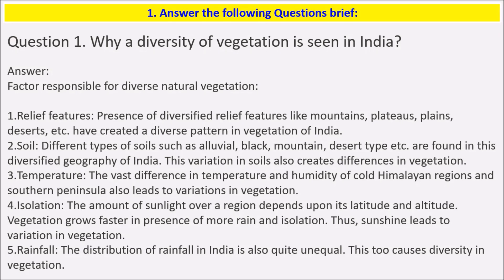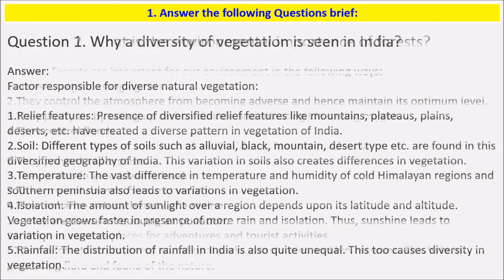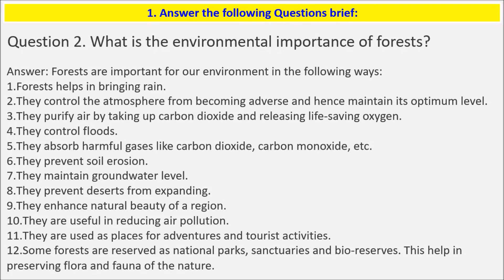The amount of sunlight over a region depends upon its latitude and altitude. Vegetation grows faster in the presence of more sunlight and insolation, which leads to variation in vegetation. Rainfall — the distribution of rainfall in India is quite unequal, and this too causes diversity in vegetation.